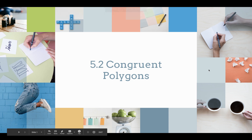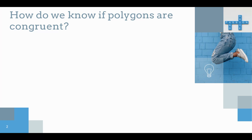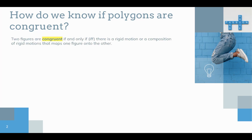Okay mathematicians, it's time for 5.2, Congruent Polygons. How do we know if polygons are congruent? Two figures are congruent if and only if there is a rigid motion or a composition of rigid motions that maps one figure onto the other.